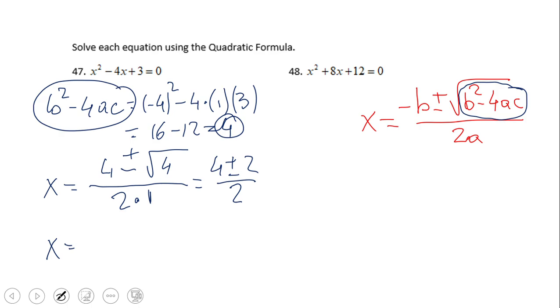The first solution is gonna be the one where we add, which is gonna be 6 over 2 which is 3, and the second one will be the one where we subtract 2, and that will be 1. So we have the two solutions, 3 and 1.